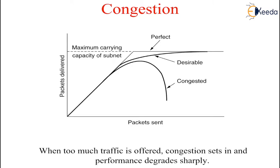Slow processors can also cause congestion. If the router's CPUs are slow at performing the tasks required of them, queues can be built up even though there is excess line capacity. Similarly, low bandwidth lines also cause congestion. Upgrading the lines but not changing the processors, or vice versa, often helps a little but frequently just shifts the bottleneck. The real problem is frequently a mismatch between parts of the system, and this will persist until all the components are in balance.